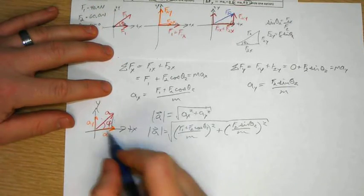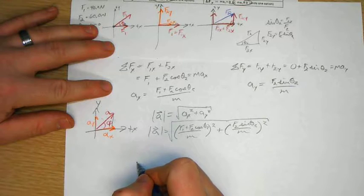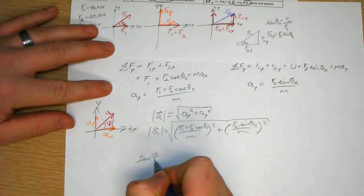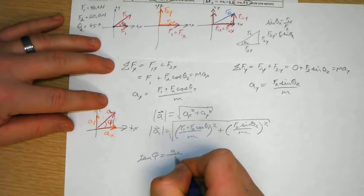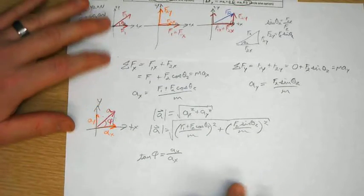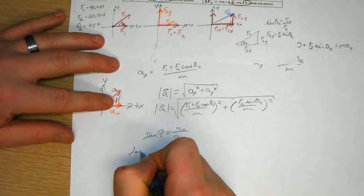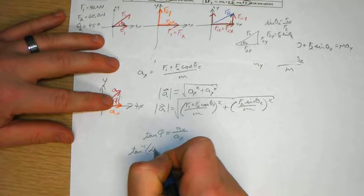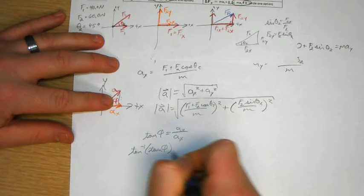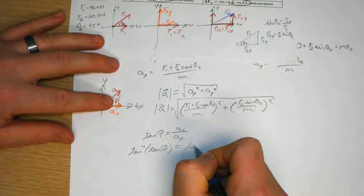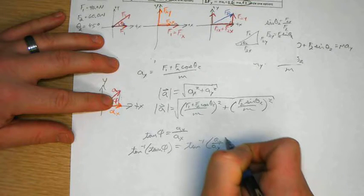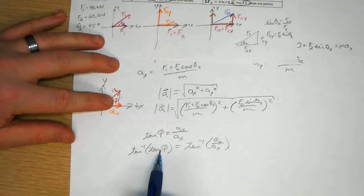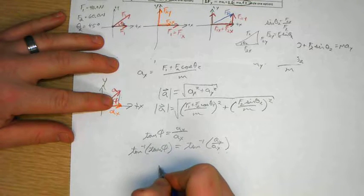But what is the direction? What is phi? Well, to do that, I'll have to take the tangent of phi, which equals the opposite ay over adjacent ax. Now, the inverse tangent of tangent of phi is going to equal the inverse tangent of ay over ax. The inverse tangent of the tangent, it undoes the tangent that's happening on phi here.